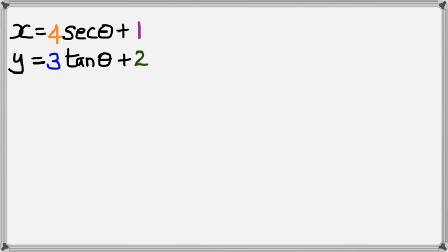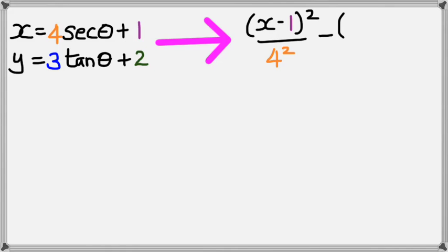x is 4 sec theta plus 1, and y is 3 tan theta plus 2. So if we're going to write this, now remember it's no longer at 0, 0, so we've got to compensate for it, and because it's plus 1, inside the brackets it'll be minus 1, and that's squared. Divided by a is actually 4, so 4 squared, minus, because it's a hyperbola, and this one is y plus, positive 2 at the end, so this one inside it's going to be y minus 2 squared, and that's divided by 3, which is the value of b, and that's b squared. So that equals 1.